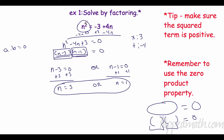3 squared is 9. 4 times 3 is 12, minus 3 is 9 — and it checks. Plug in 1: 1 squared is 1. 4 times 1 is 4, minus 3 is 1 — and it checks. All right, so that is solving by factoring.